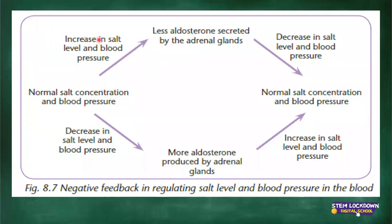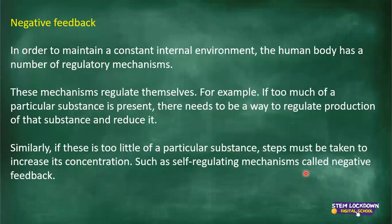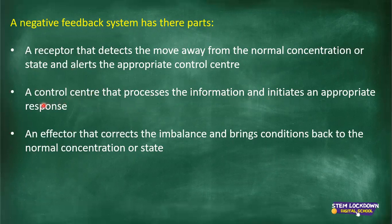You get feedback that a factor has increased, then an action is taken. If that factor decreases, then another action is taken. It is a feedback system in three parts: a receptor that detects the move away from the normal state and alerts the appropriate control center; a control center that processes the information and initiates an appropriate response; and an effector that corrects the imbalance and brings conditions back to the normal state.